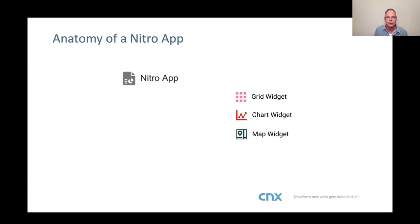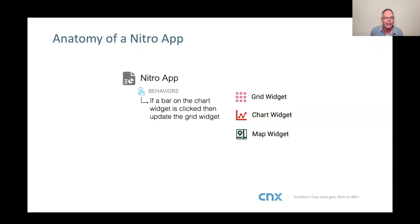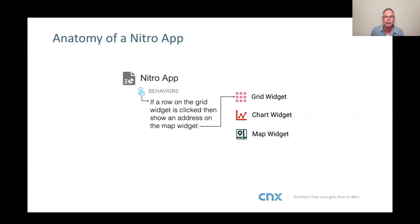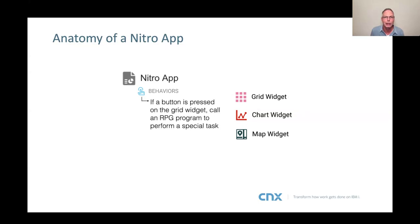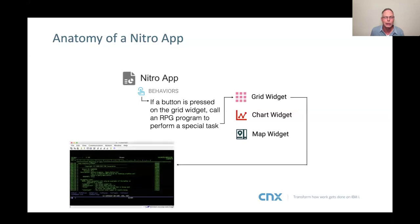Behaviors are actions the user can take. For example, if the user clicks on a bar on a chart widget, it could update a list. Another behavior: clicking a row on a grid might update a map — say the grid had an address and now we're showing that on the map. Another example: a button on a grid widget could call a special RPG operation — something outside the base graphical capabilities of the Nitro App Builder. You can write that in manual code and call that process, or use something you already have.